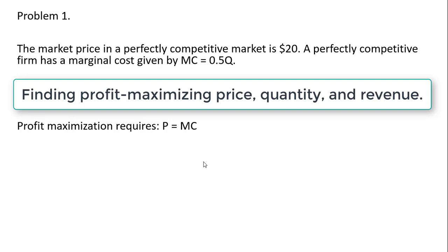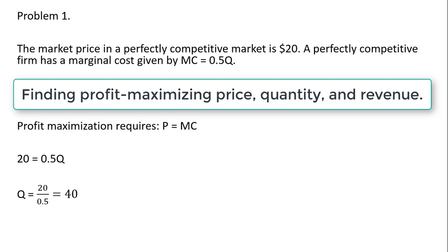The profit maximizing price is given to the perfectly competitive firm — the firm is a price taker. Taking the going market price, the equilibrium price is a given, so that's $20. We set $20 equal to marginal cost and solve for Q. Dividing through by 0.5, we get 40. So this profit maximizing firm will produce 40 units of output and sell each unit at the going market price of $20.